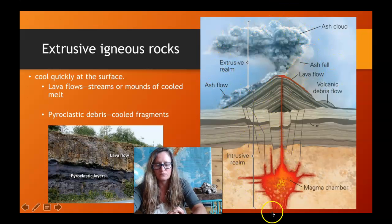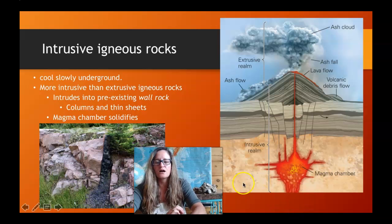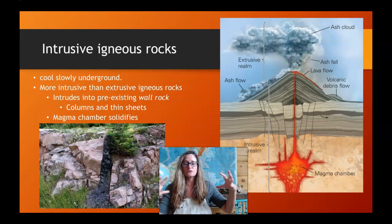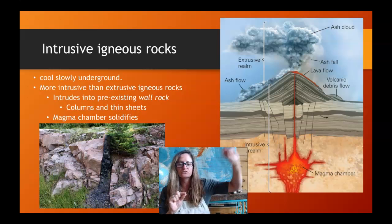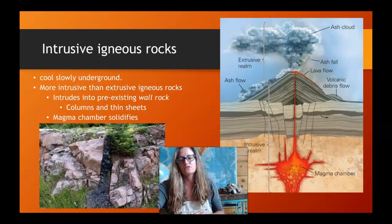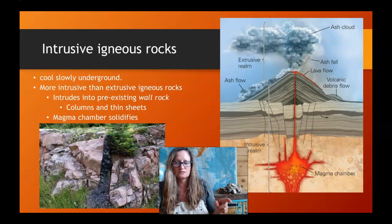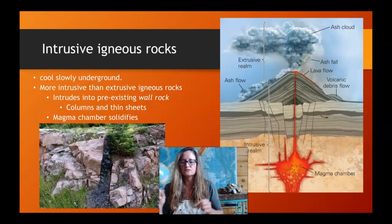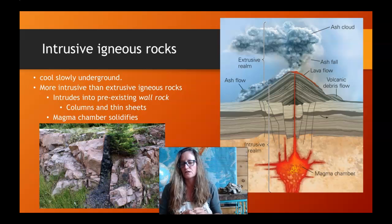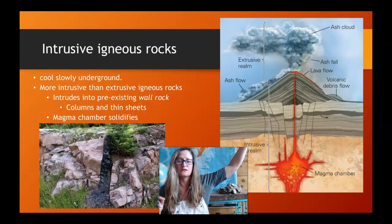In the intrusive realm, we have rocks that are cooling and crystallizing underground. They can form as big blobs near the magma chamber, as offshoots of the magma chamber, or along layers in the subsurface — there are different shapes these intrusions can be. These are also called plutonic rocks. Plutonic rocks are the opposite of volcanic rocks, also described as intrusive versus extrusive. The intrusive ones cool and crystallize much slower than those that come out of the volcano in the extrusive realm.